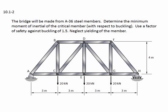Problem 10.1-2. The bridge will be made from A36 steel members. Determine the minimum moment of inertia of the critical member with respect to buckling. Use a factor of safety against buckling of 1.5. Neglect yielding of the member.